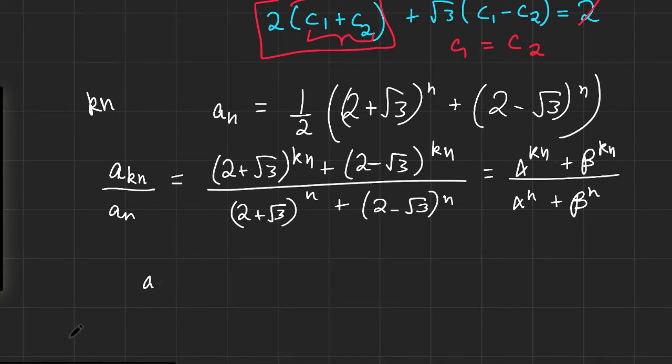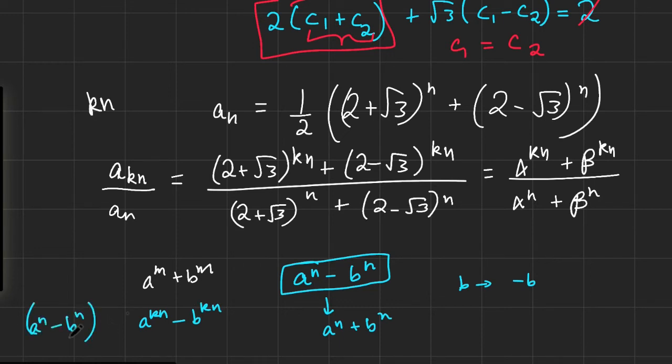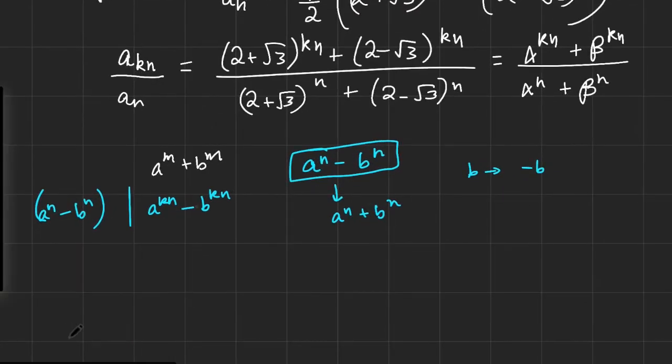We do know that there is a way to factor numbers of the form A to the n plus B to the n, but this only works if n is an odd number. Well, we do have a kn here, which is odd, and the factorization stems from the factorization of A to the n minus B to the n. If we simply substitute B equals minus B and n is odd, we'd get a factorization for A to the n plus B to the n. So we know that in this factorization, if this was A to the n minus B to the n, we know that A to the n minus B to the n is actually a factor of this because of the factorization for this.